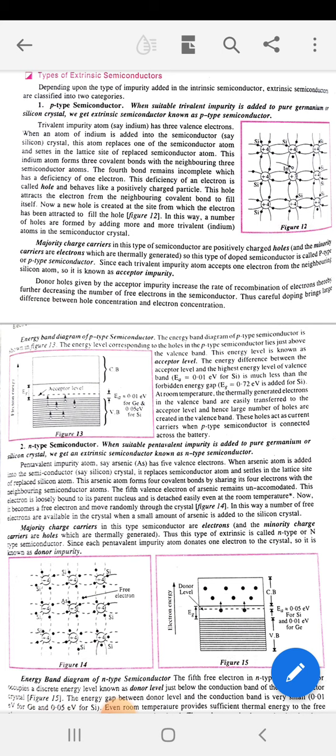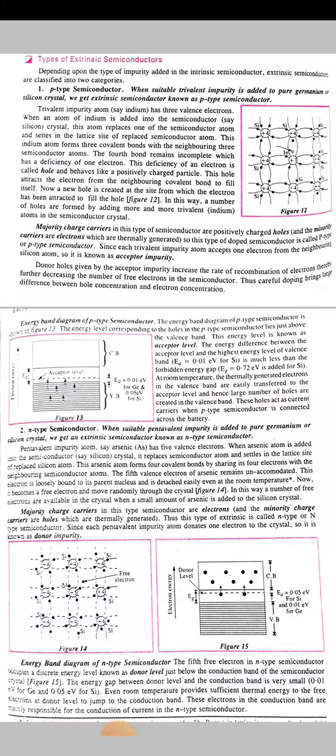Trivalent impurities like indium have three valence electrons. When an atom of indium is added into the semiconductor crystal, this atom replaces one of the semiconductor atoms and settles in the lattice site of the replaced semiconductor atom. This indium atom forms three covalent bonds with the neighboring three semiconductor atoms. Indium has three valence electrons, silicon has four valence electrons, so the fourth bond remains incomplete, which has a deficiency of one electron.